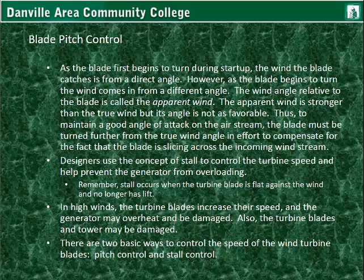Designers use the concept of stall to control turbine speed and help prevent the generator from overloading or being overspun. Stall occurs when the turbine blade is flat against the wind and no longer has any lift. In high winds, the turbine blades increase their speed and the generator may overheat and be damaged — you don't want to over-speed the wind turbine. The turbine blades and tower may also be damaged as a result — a bearing or other component could get fatigued, overheated, cause vibrations, crack, and eventually destroy the entire assembly.